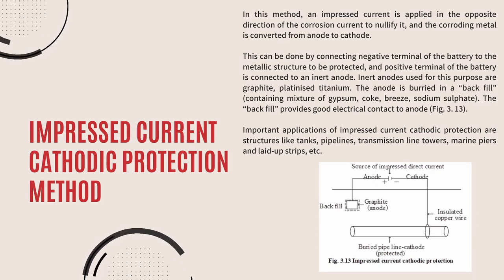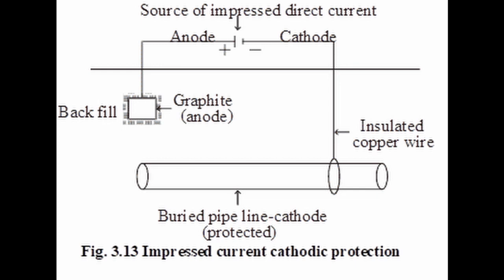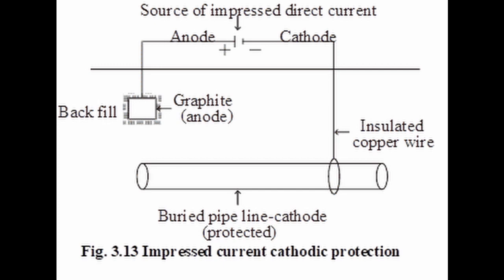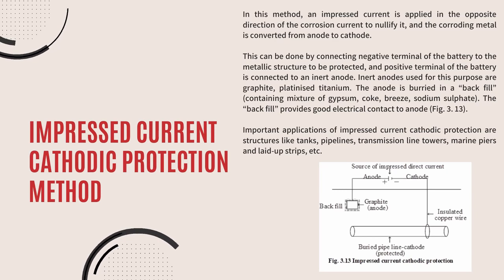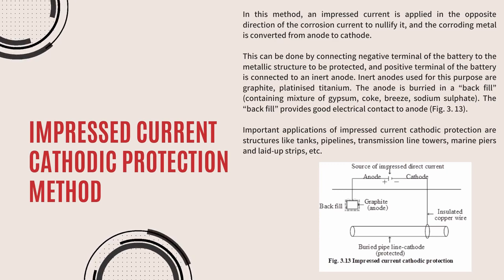The metal to be protected is connected to the negative terminal of the battery, and the positive terminal is connected to the inert anode. Current flows from the external battery terminal to the metallic surface through the backfill material — a mixture of gypsum, coke breeze, and sodium sulfate — which provides good electrical contact to the anode. Important applications of impressed current cathodic protection include structures like tanks, pipelines, transmission line towers, marine piers, and ladder structures.